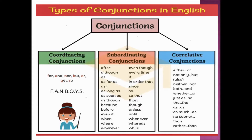To remember all of the coordinating conjunctions, we can learn the following acronym: FANBOYS. F refers to 'for', A denotes 'and', N refers to 'nor', B denotes 'but', O refers to 'or', Y refers to 'yet', and S denotes 'so'.